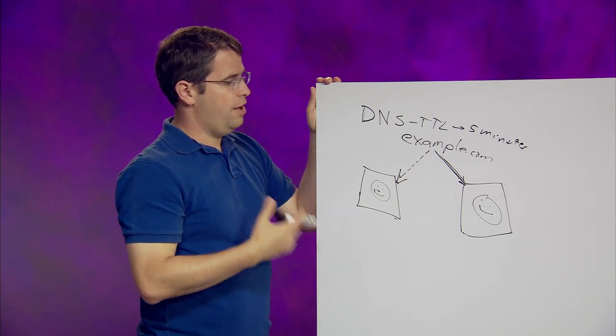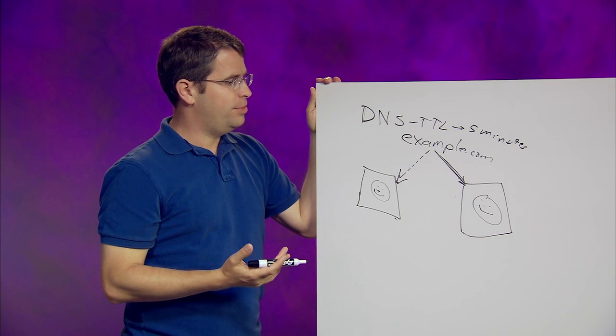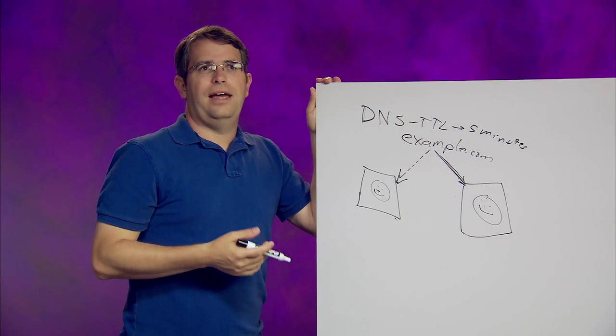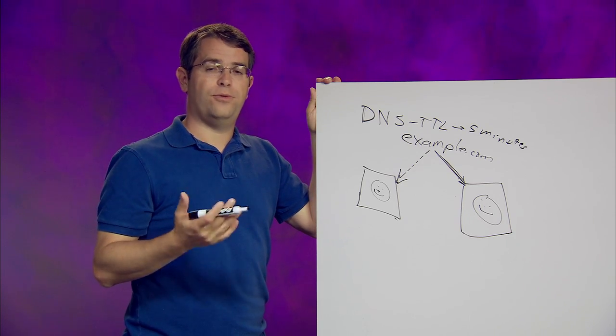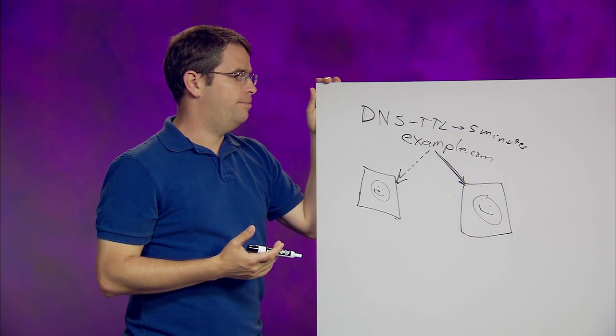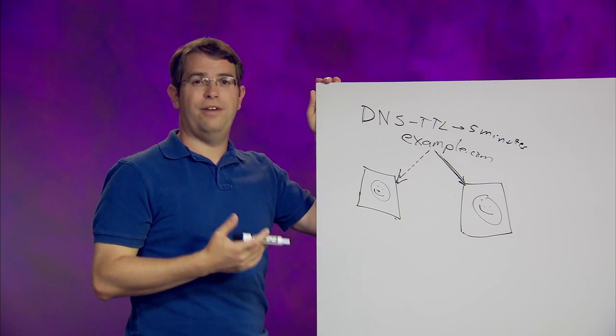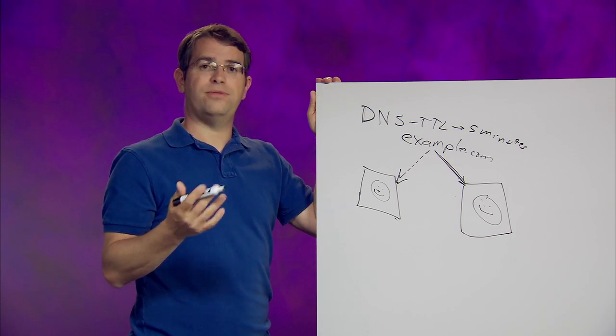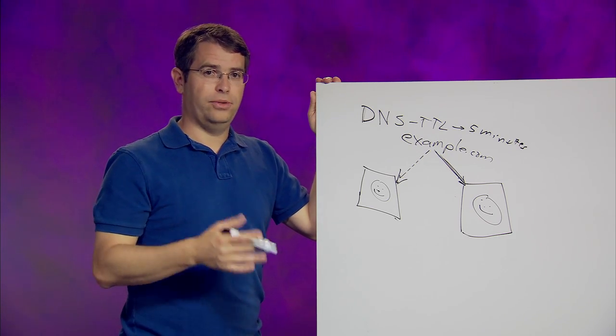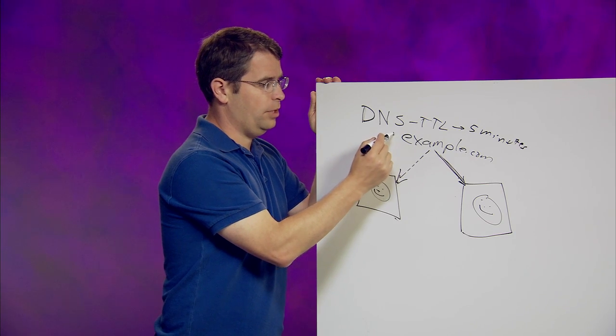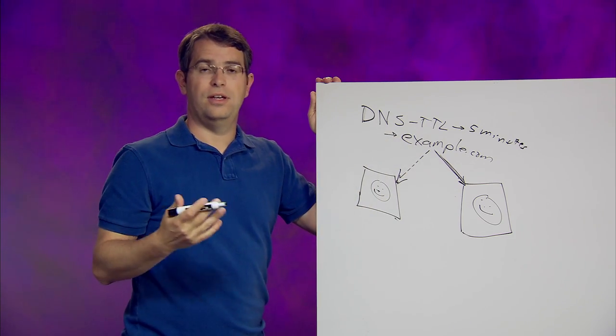So every so often, Googlebot comes along. A good rule of thumb is that we'll try maybe every day to refresh what the IP address is for a particular domain name. You can imagine maybe every 500 fetches of content, or maybe every 1,000 fetches of content. So at least the heuristics used to be in the old days, at least once a day, we'd recheck to make sure that the IP address has changed.